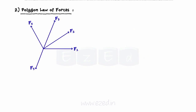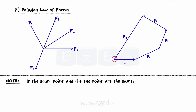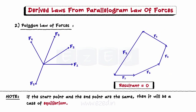Consider the same example. If the forces are applied such that when the polygon is drawn the start point and end point are the same, then the resultant of the system is zero — no resultant acts on the system. Hence, the stone will not move; that is, the system is in a state of equilibrium.